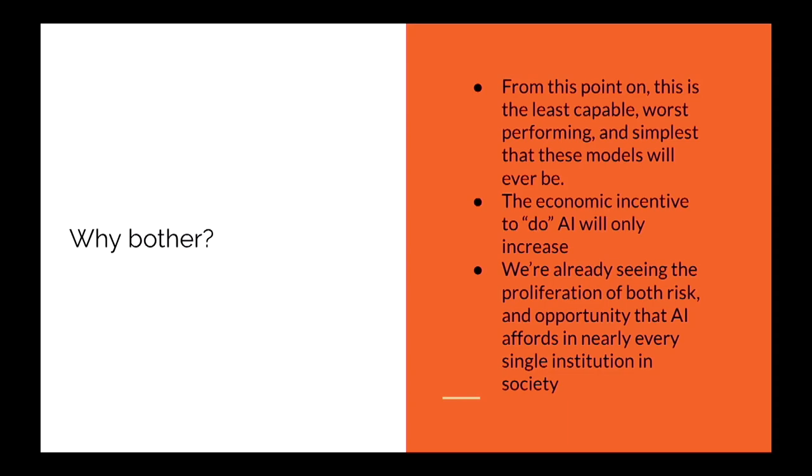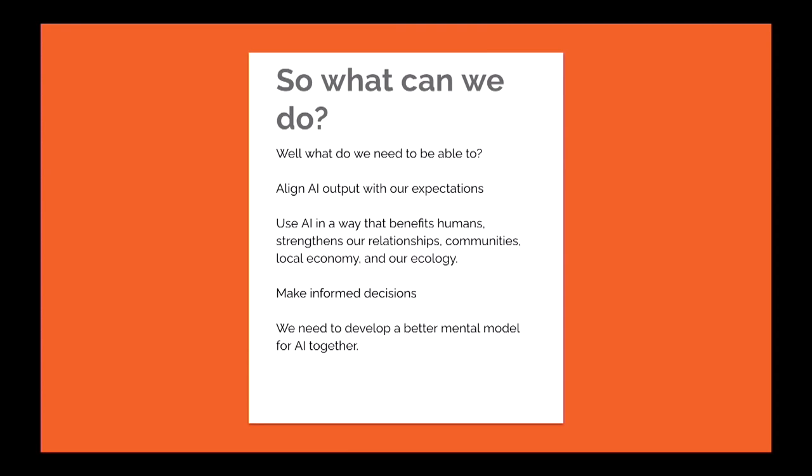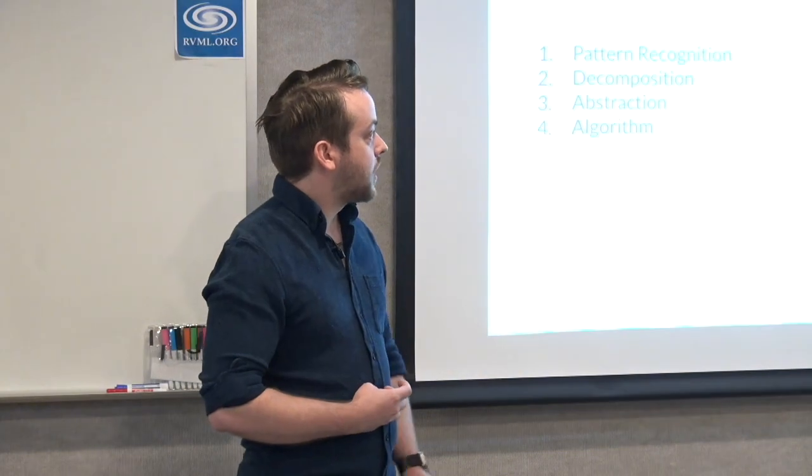We're already seeing the proliferation of both risk and opportunity that AI affords in nearly every single institution in society, because it is a general purpose. It's intelligence. It's not your bookkeeping expert. It's not your French expert at a level a little bit lower. It is starting to be able to mimic human reasoning. And so the possibilities are not endless right now. They still have a lot of limitations, but there's certainly more than software has ever been capable of handling. So what can we do? What do we need to be able to do in this room interfacing with this information, this flood of information that's out there regarding AI? Yes, it's a bubble, but in that bubble are a lot of risks and benefits. Can we use AI in a way that benefits humans, strengthens our relationships, our communities, our local economy, and our ecology? Can we make informed decisions so that we know when to use AI and when we shouldn't be using AI?